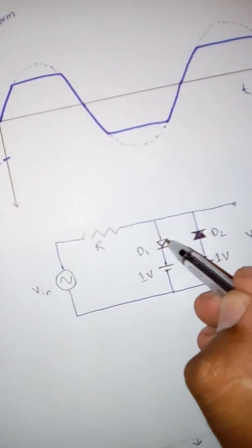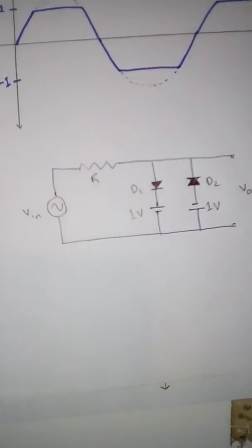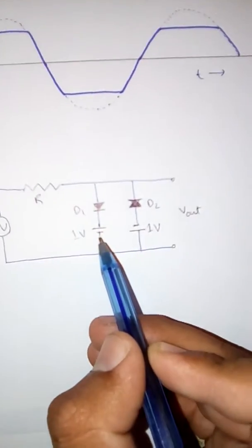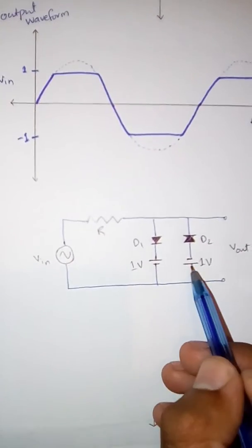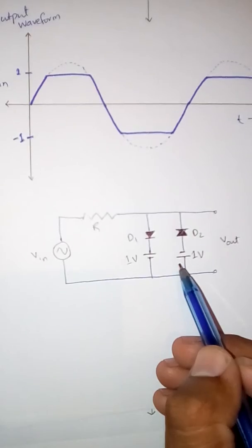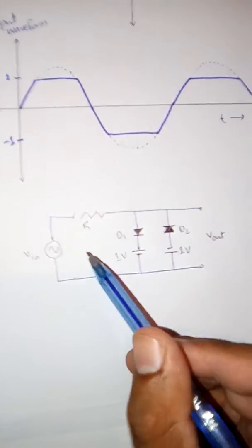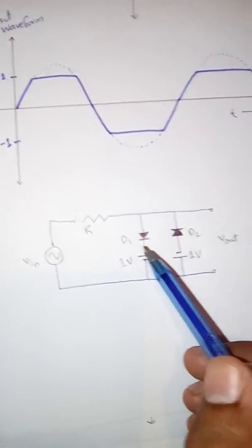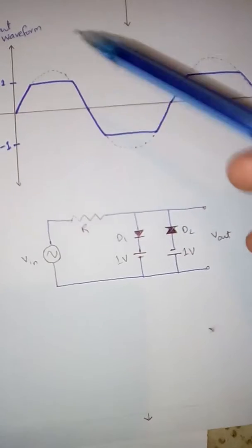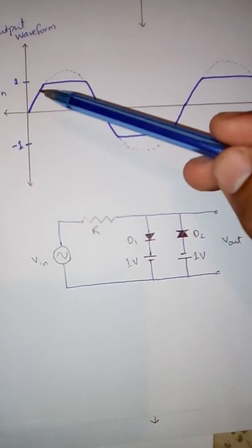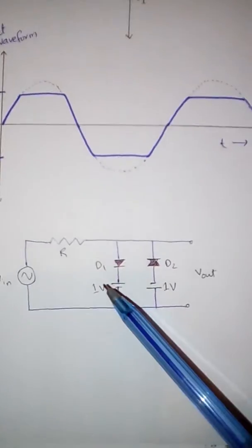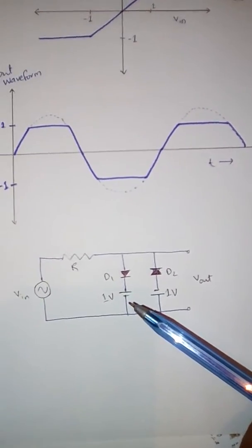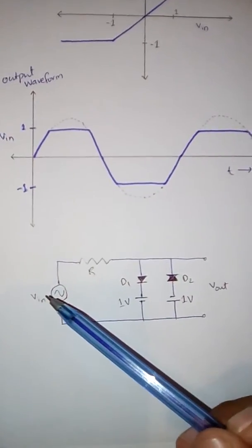This is the final circuit. This diode is reverse biased and this one is also reverse biased. So when Vin comes in and both diodes are reverse biased, no diode passes current — so it goes straight through and we get as output whatever we give as input. Both diodes are in reverse bias position where they act like insulators.